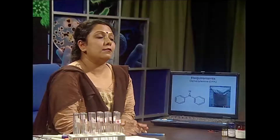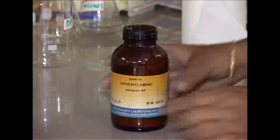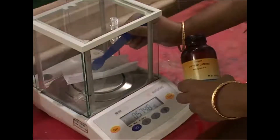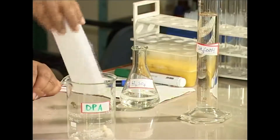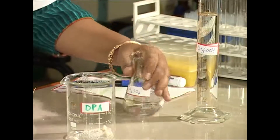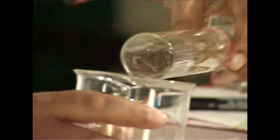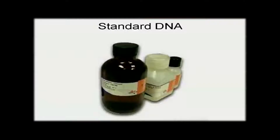Let's talk about the reagents needed. First, the diphenylamine reagent: you have to take 1.5 grams of diphenylamine, dissolve it in 1.5 mL of sulfuric acid — a very hazardous chemical — and make up the volume with 100 mL of glacial acetic acid. So we have to combine sulfuric as well as acetic acid. You also need standard DNA to compare with the natural DNA.